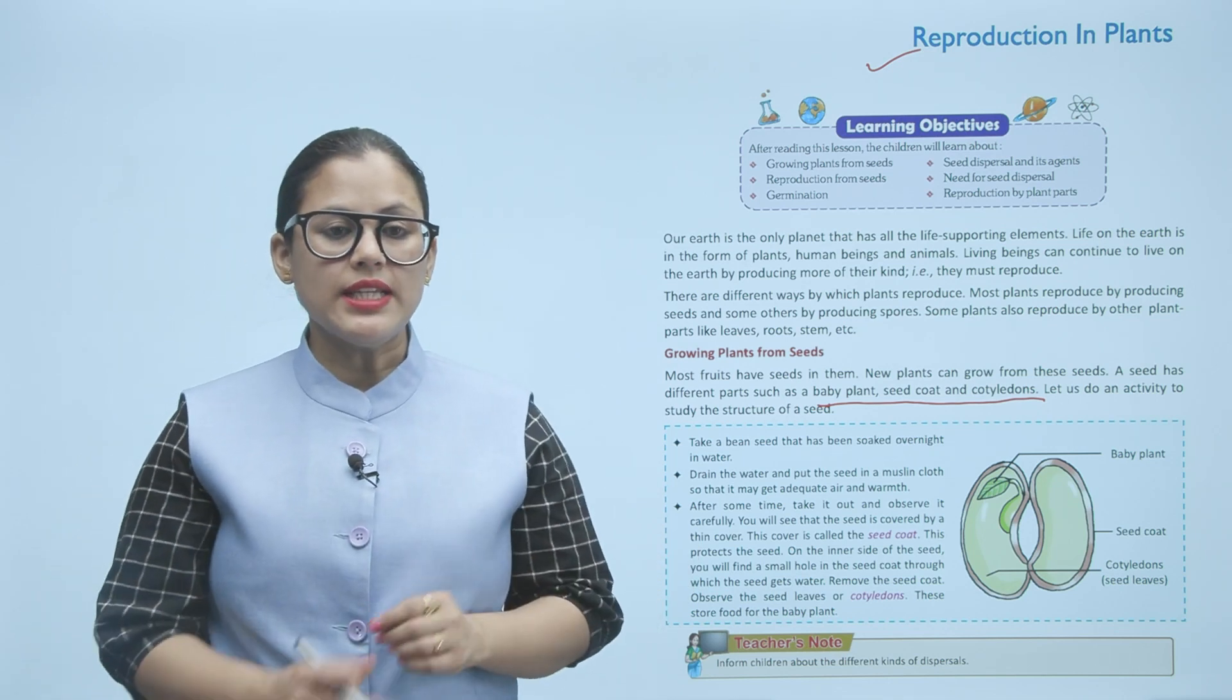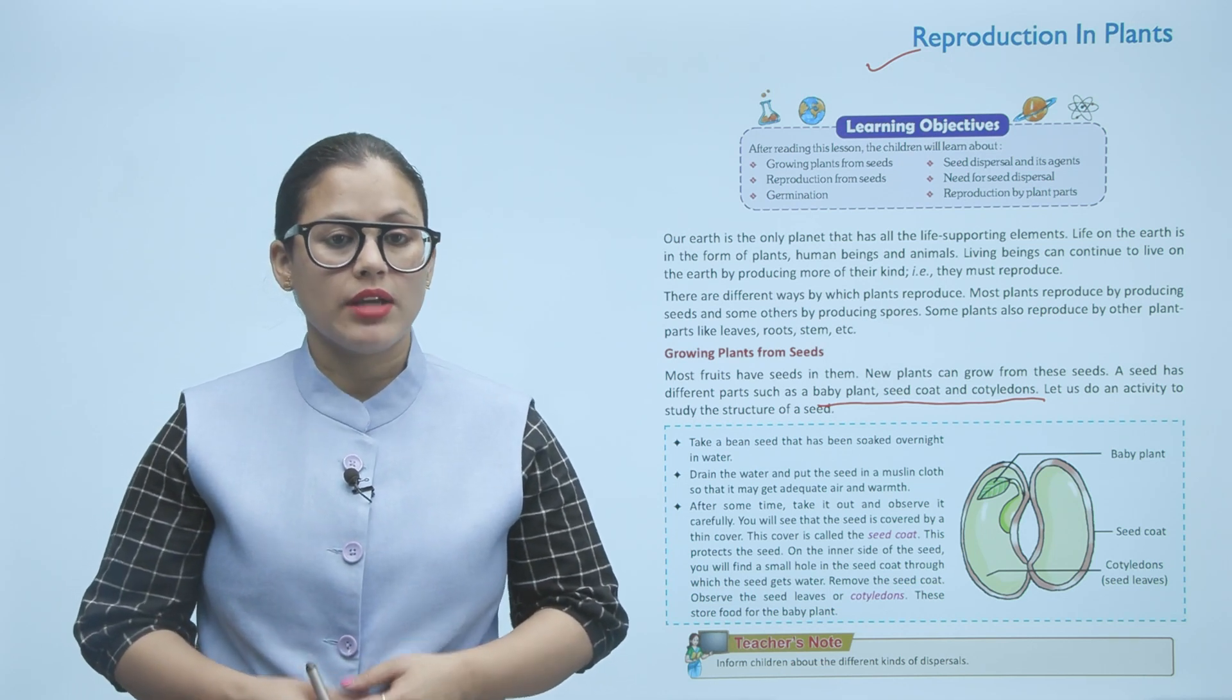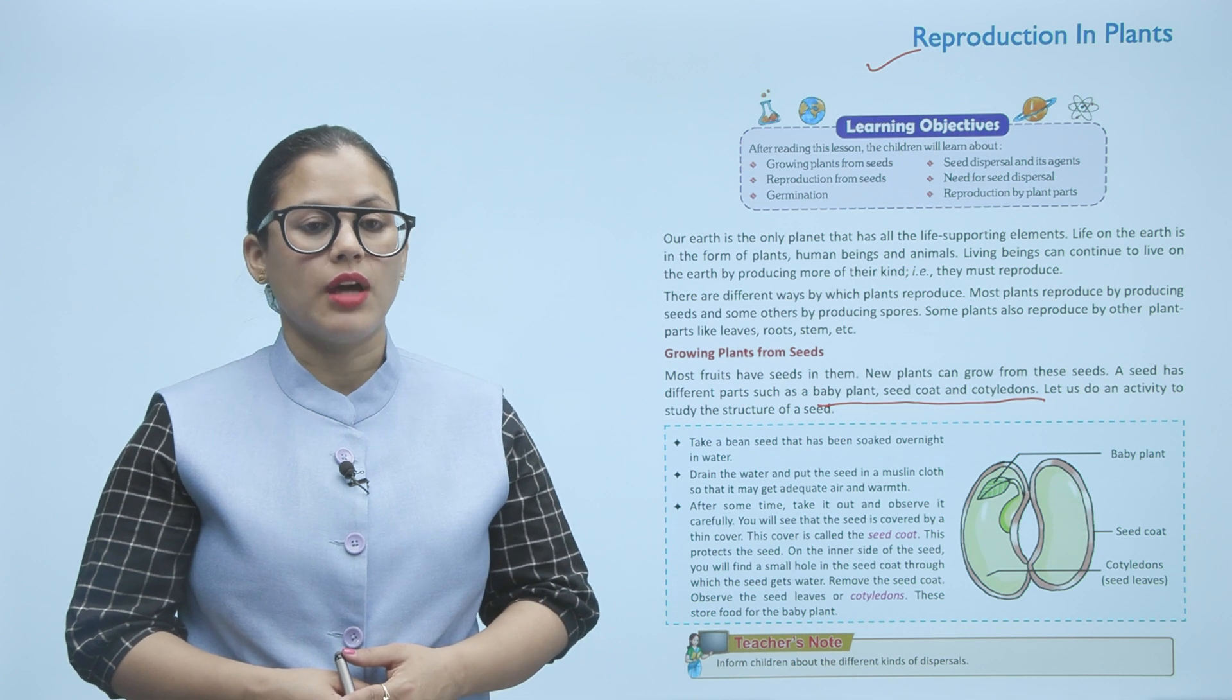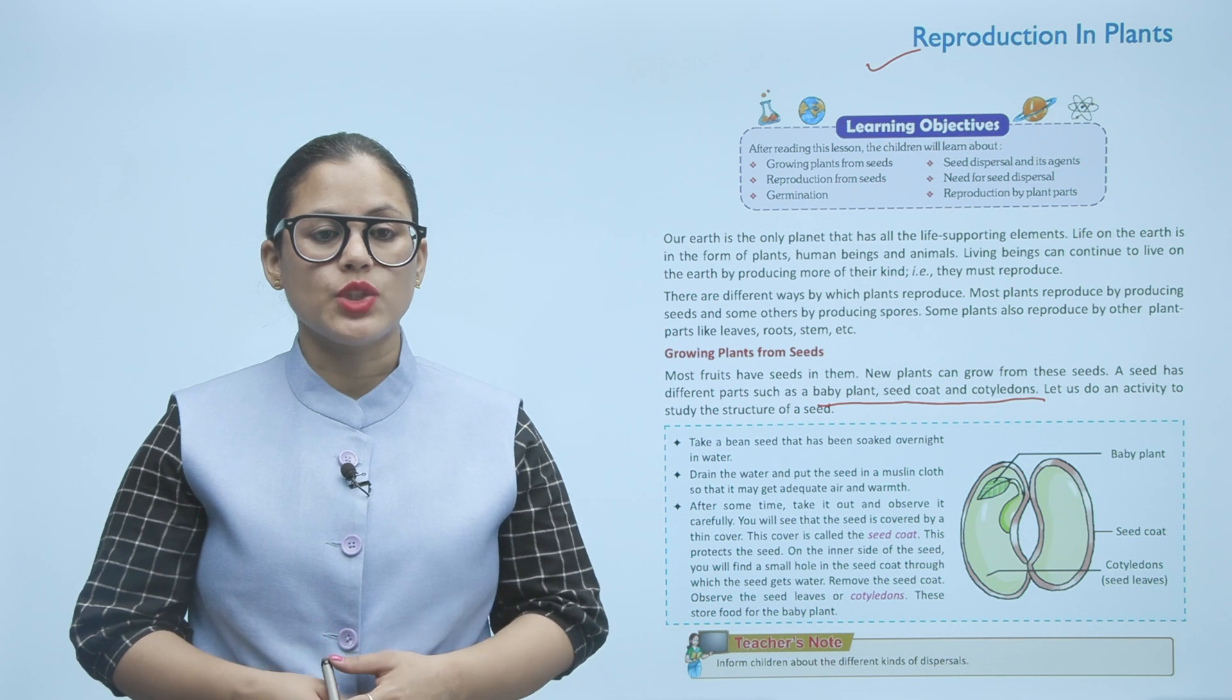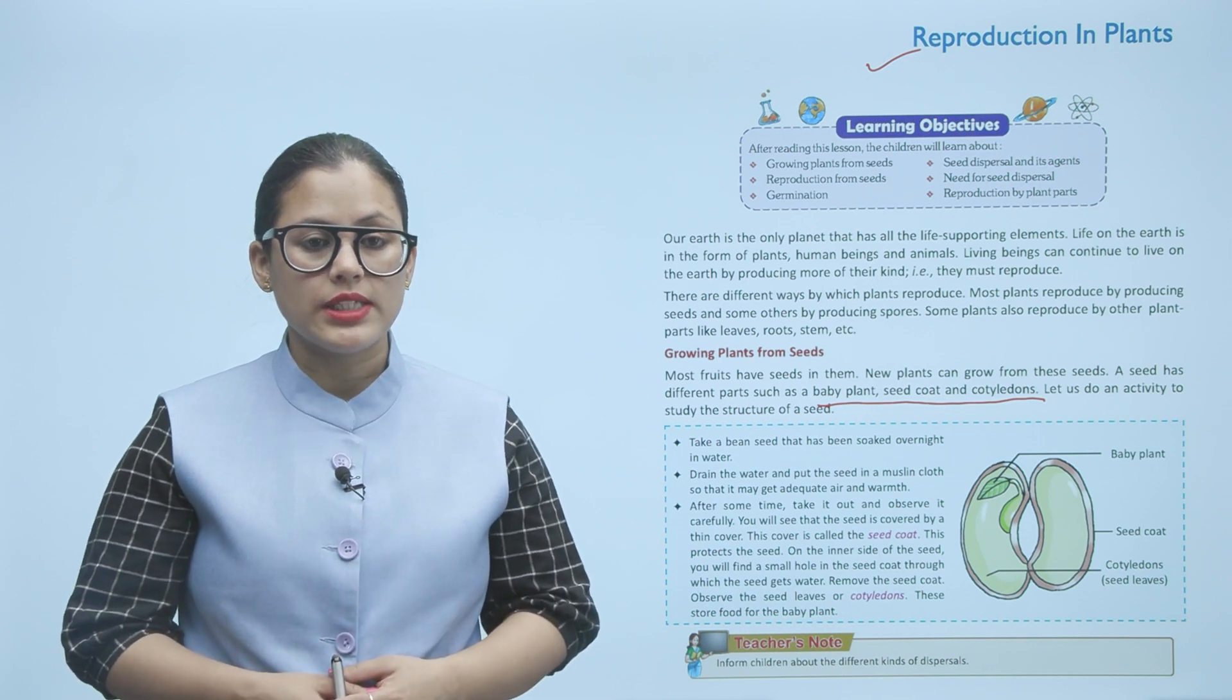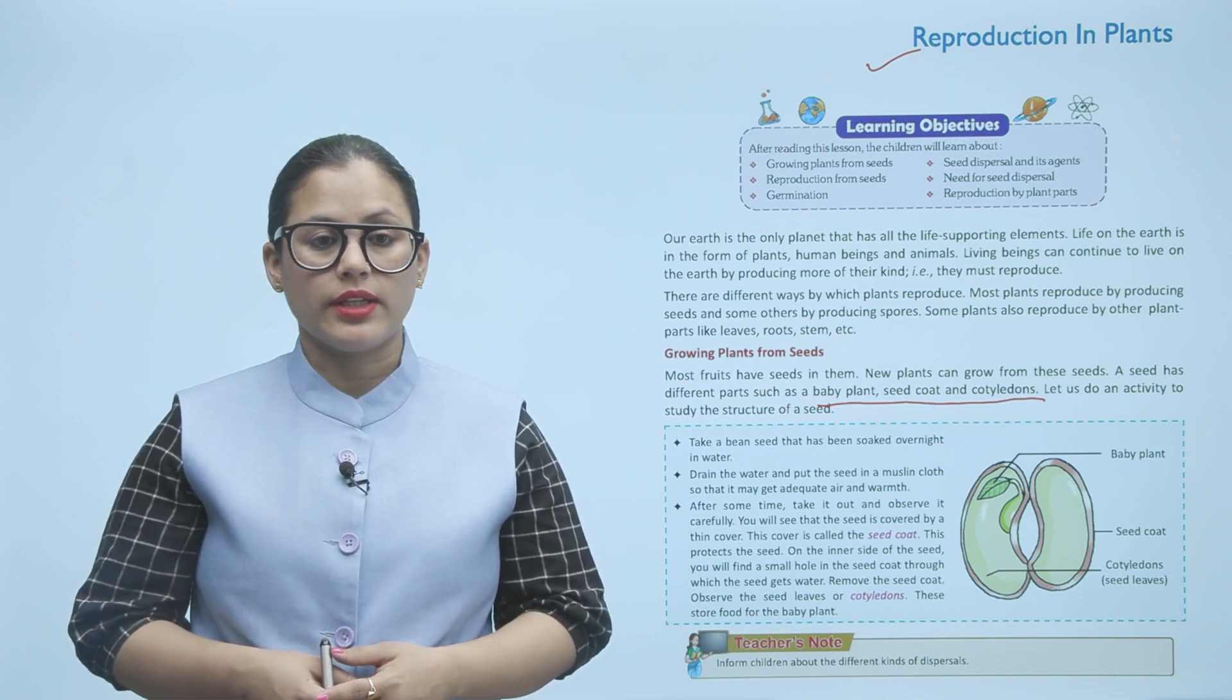Take a bean seed that has been soaked overnight in water. Drain the water and put the seed in a muslin cloth so that it may get adequate air and warmth. After some time, take it out and observe it carefully. You will see that the seed is covered by a thin cover. This cover is called the seed coat, which protects the seed.